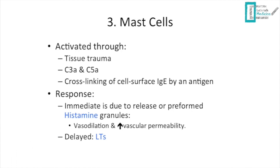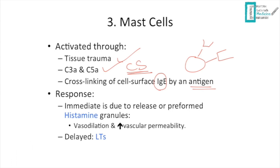The third mediator is mast cells, which can be activated through three ways: tissue trauma, C3a and C5a from the complement system, and cross-linking of surface IgE by an antigen — for example, this cross-linking happens in asthma. The mast cell response is classified into immediate and delayed responses.